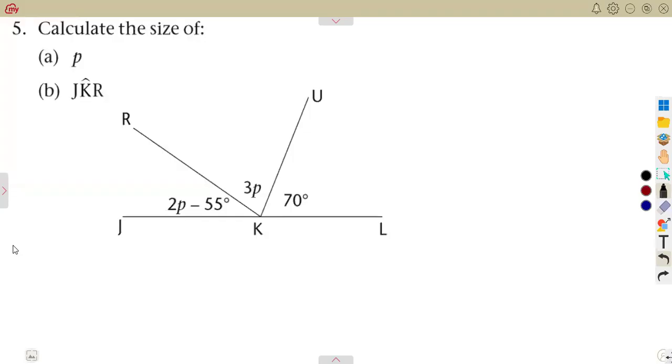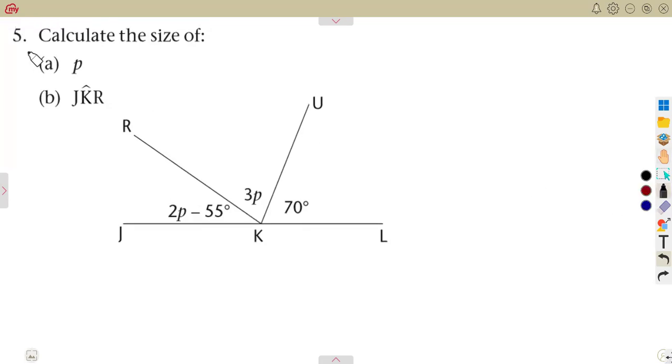Let's see what we have in this question on geometry of straight lines. You are given to calculate the size of angle p, which is the first question. Remember, as long as you are working with a straight line, the angles on a straight line add up to 180 degrees.